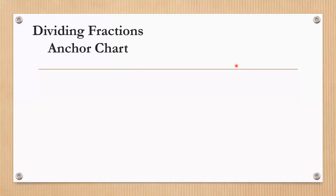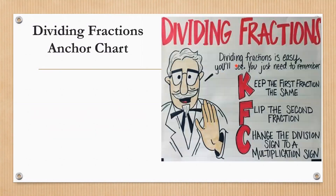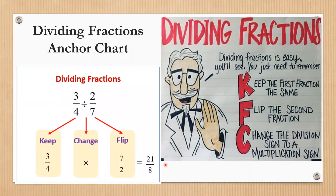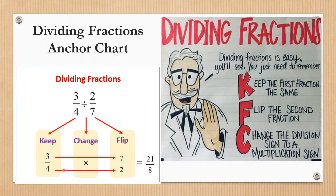Here is the anchor chart you need to remember: KFC. K means keep the first fraction the same, F means flip the second fraction, C means change the division sign to a multiplication sign. It looks like this: keep the first one, flip the second one to get its reciprocal — so 7 over 2 becomes 2 over 7 — change the middle sign to multiplication, then multiply across: 7 times 3 is 21, 4 times 2 is 8.